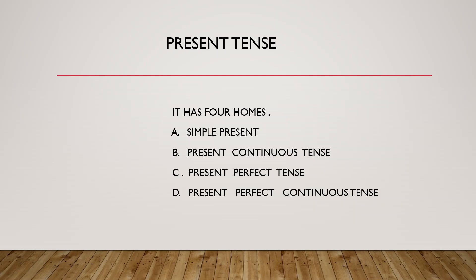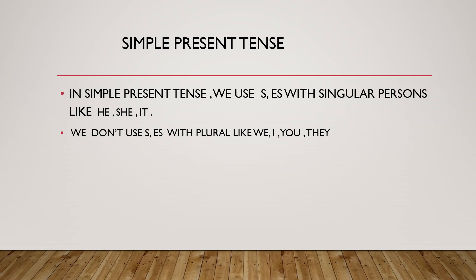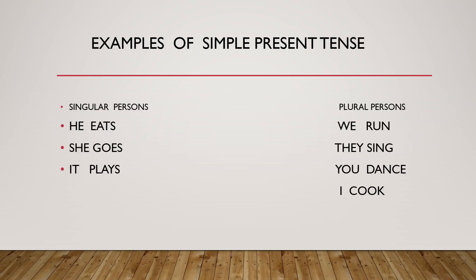In simple present tense, we use S, E, S with singular persons like he, she, it. We don't use S, E, S with plural like we, I, you, and they.